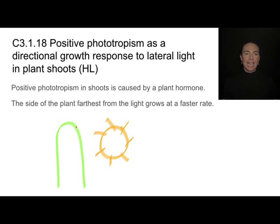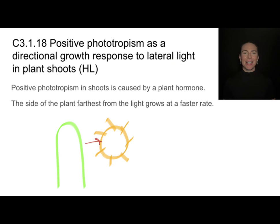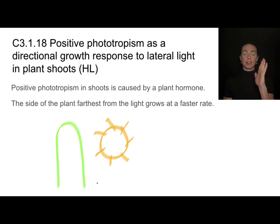Now let's say I have a plant shoot — the top of the plant — and it is continually exposed to what we call lateral light. Lateral means on the side, so not directly above but on the side. This is a really inefficient situation for this plant shoot because it's only able to absorb direct sunlight on one side. It would be much more beneficial for the plant to be leaning towards that light.